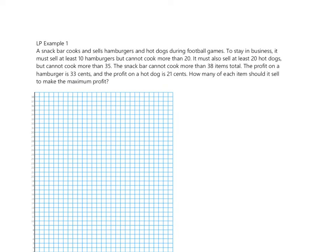A snack bar cooks and sells hamburgers and hot dogs during football games. To stay in business it must sell at least 10 hamburgers but cannot cook more than 20. It must also sell at least 20 hot dogs but cannot cook more than 35. The snack bar cannot cook more than 38 items total. The profit on hamburgers is 33 cents and the profit on hot dogs is 21 cents.